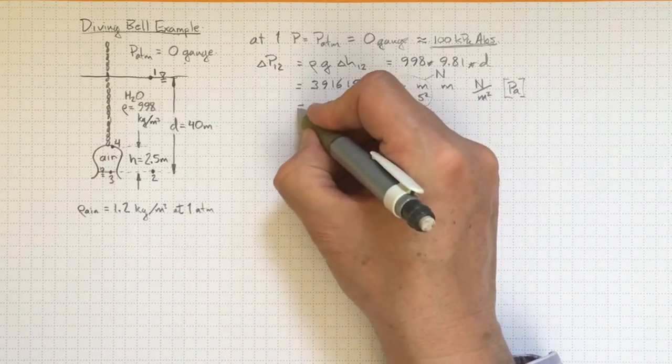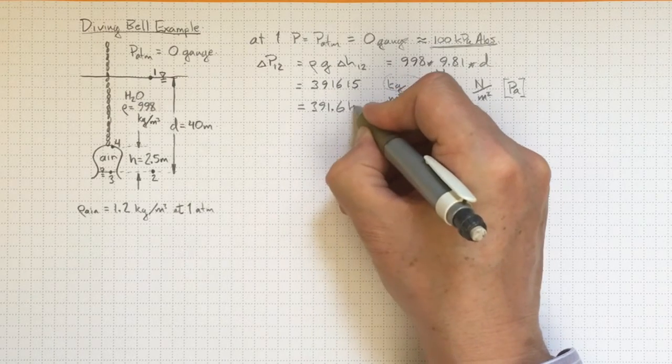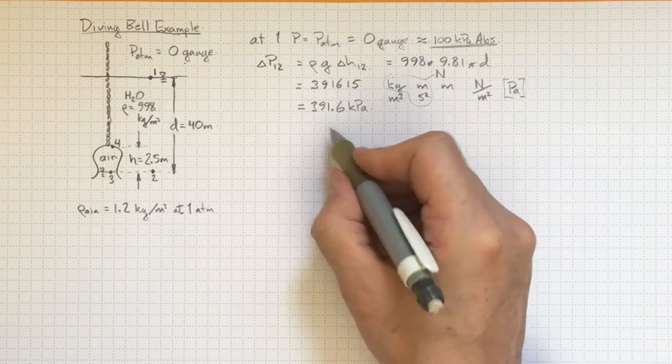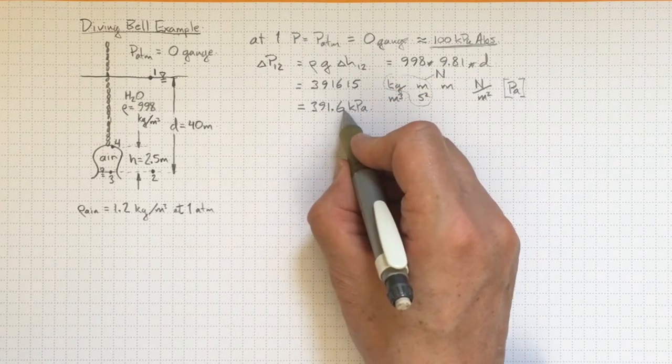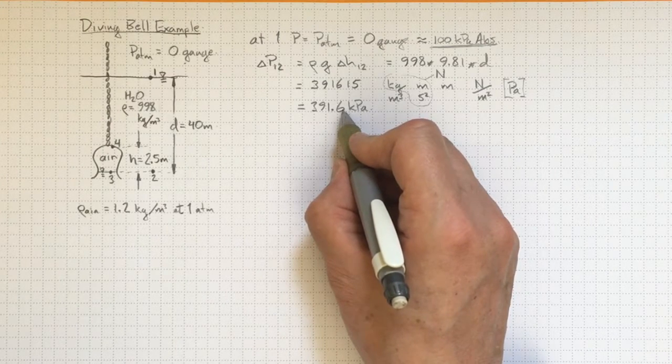Putting it in our more common engineering units, that'll be 391.6 kilopascals. So that's about four atmospheres higher pressure than atmospheric pressure.